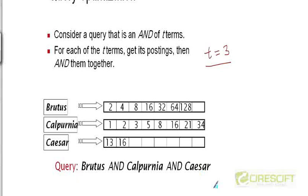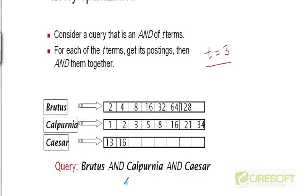How do we answer this query? Well, as usual, we will look up the dictionary and extract the pointer to the postings lists of these three terms. And then we will do two AND operations to combine, or intersect, the postings lists into the final answer list.